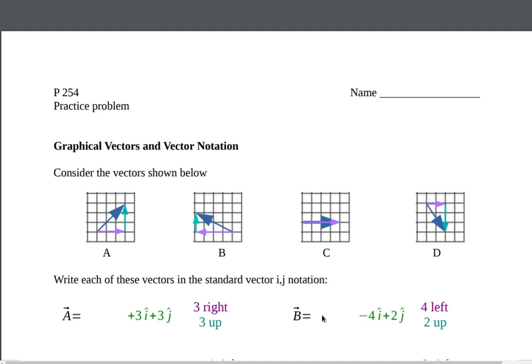Same thing happens with up and down, but that gives us our j hat component. So A went one, two, three boxes up.